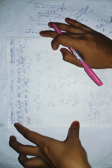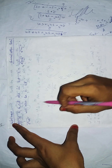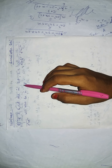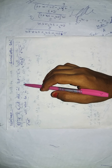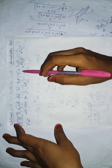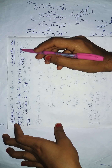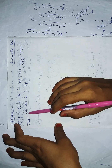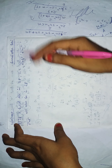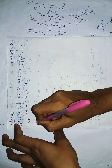Good morning students, welcome to today's class. The first question is: a, b, c, d are in GP (geometrical progression), and we have to show that 1/(a²+b²), 1/(b²+c²), and 1/(c²+d²) will also be in GP. So let's prove this.